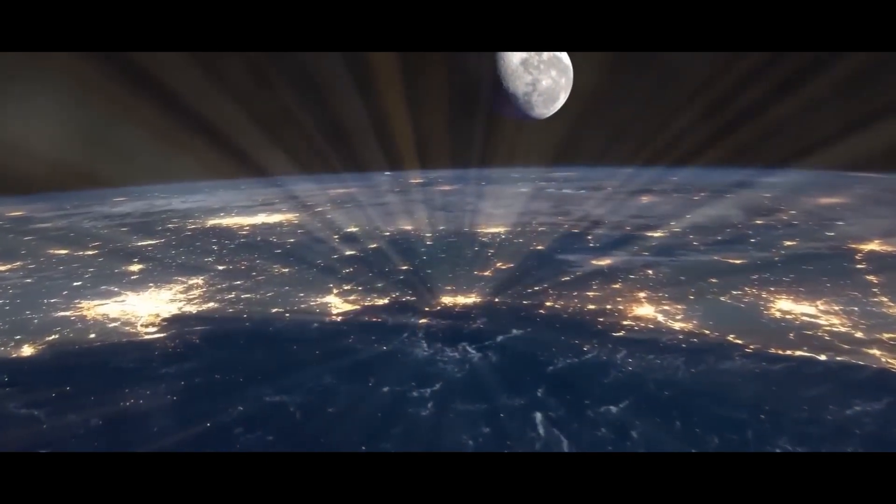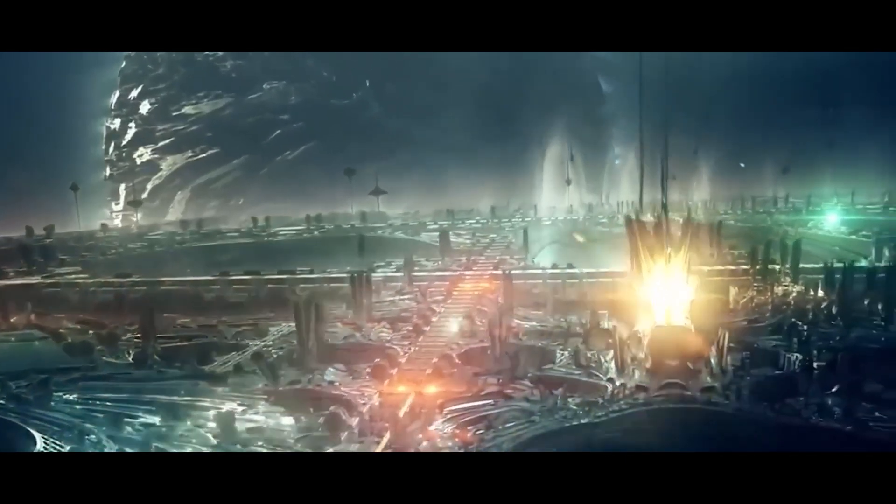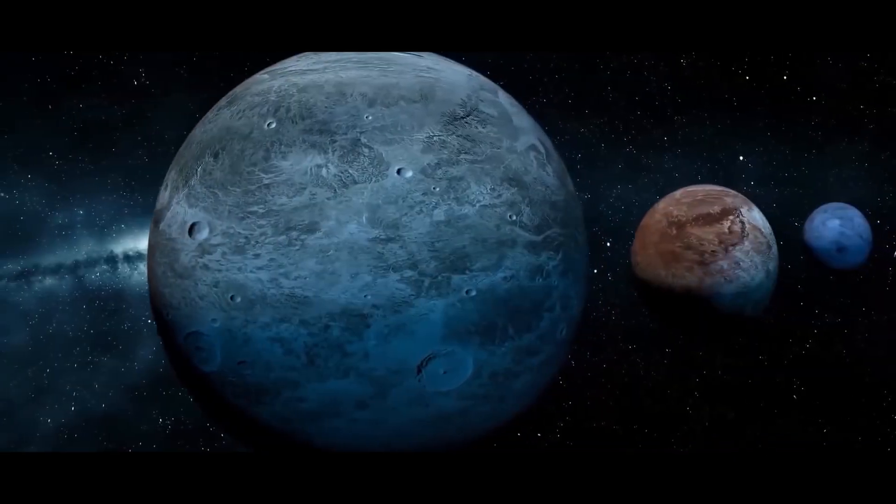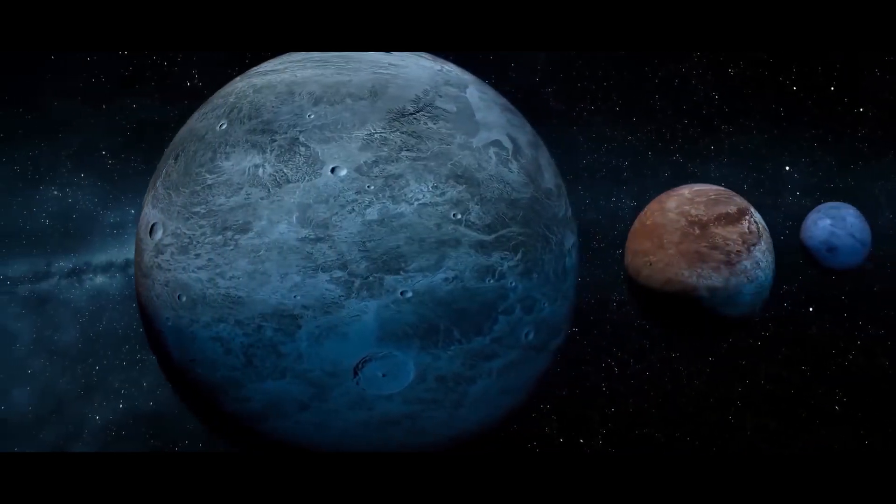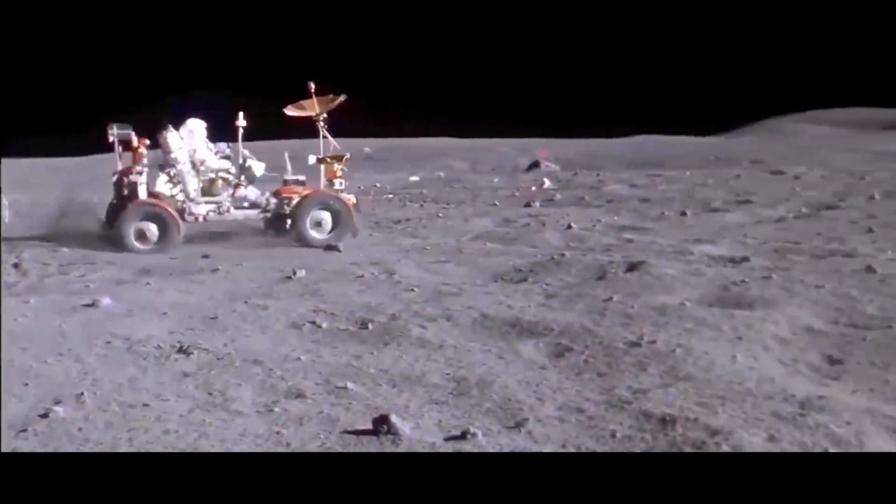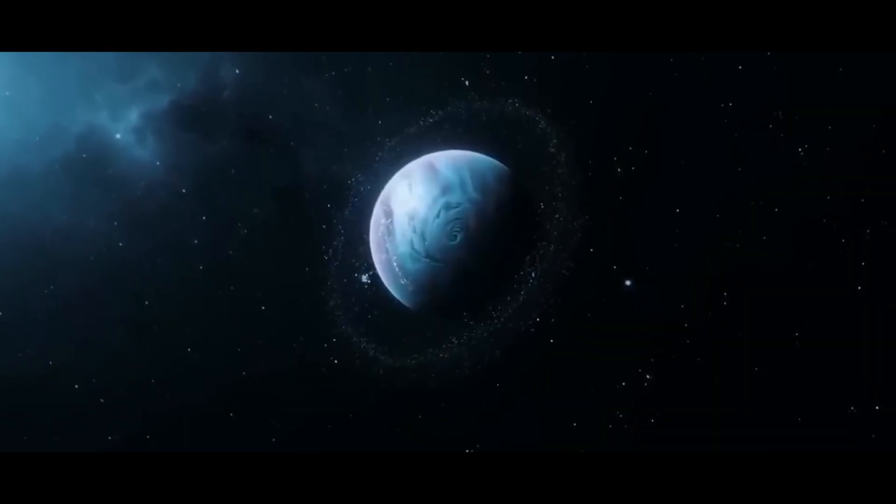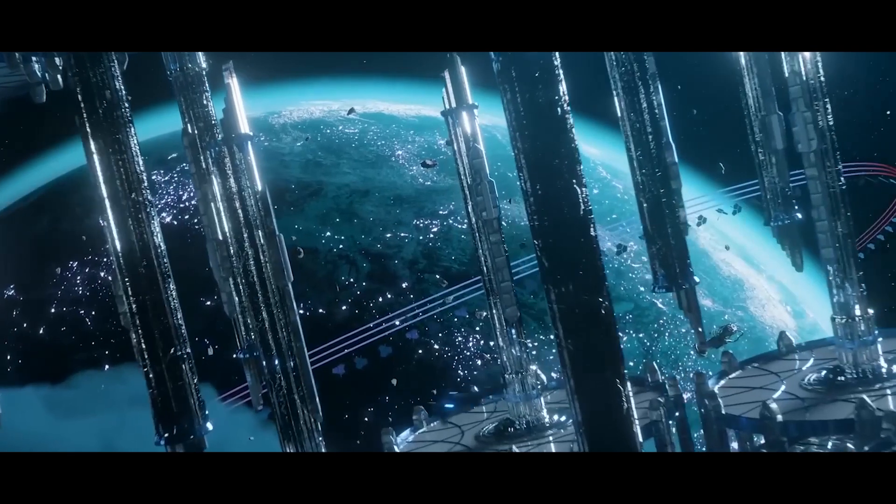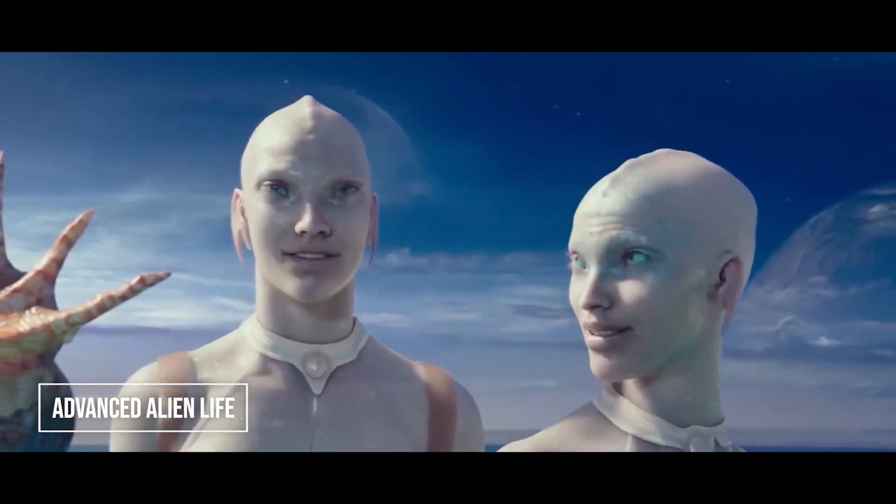These lights could provide definitive proof that extraterrestrial life exists on Proxima B. Given that our galaxy alone has over a quadrillion planets, life on a moon or another exoplanet in deep space is possible. In other words, it could be home to advanced alien life.